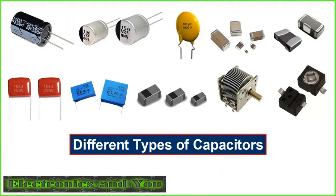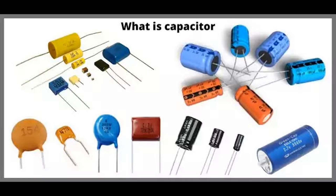Audio signal processing: Capacitors are commonly used in audio circuits for coupling and filtering. They can be part of tone control circuits, allowing adjustment of bass and treble frequencies. Additionally, capacitors can be used in crossover networks for speakers, dividing the audio signal into different frequency bands for specialized drivers such as woofers and tweeters. In summary, capacitors contribute significantly to signal processing by allowing designers to manipulate frequency-responsive circuits, whether for filtering out unwanted frequencies, tuning to a specific frequency, or shaping the response of an audio signal.